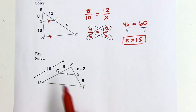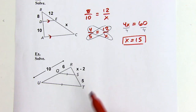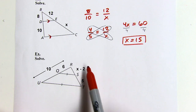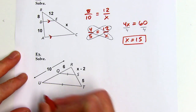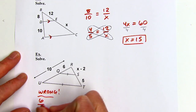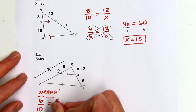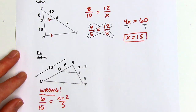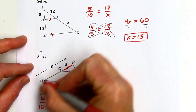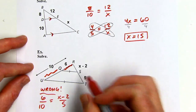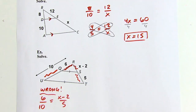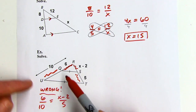Let's try another example. There's a common mistake on these problems — a lot of people will look at this and say 6 is to 10 as x minus 2 is to 5. That is wrong. 6 is to its corresponding segment as x minus 2 is to its segment, but 10 is the whole side length, not just the piece we want.